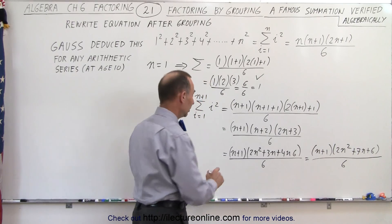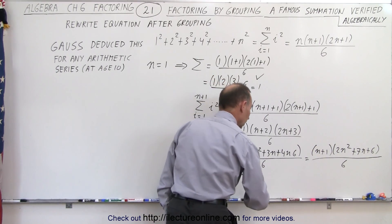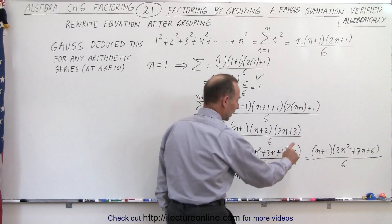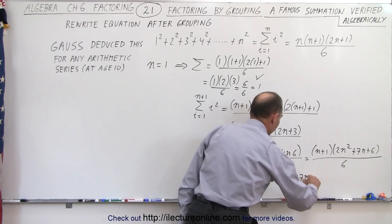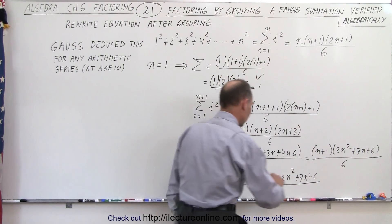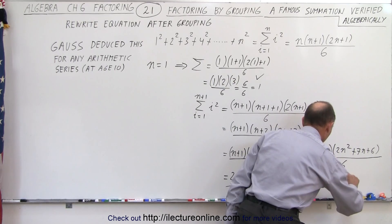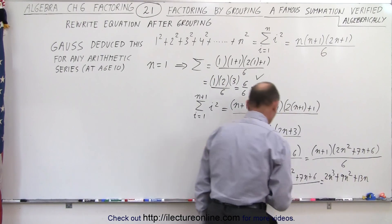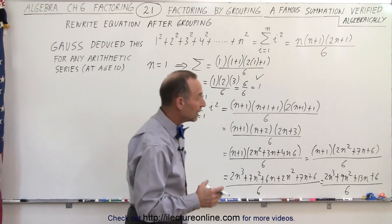If we multiply that together using the distributive rule, n multiplied times each of those terms gives us 2n cubed plus 7n squared plus 6n. Now we multiply 1 times each of the three terms, which is plus 2n squared plus 7n plus 6, all divided by 6. When we combine like terms, we have 2n cubed, then 7n squared plus 2n squared which is 9n squared, then 6n plus 7n which is 13n, plus 6, all divided by 6.